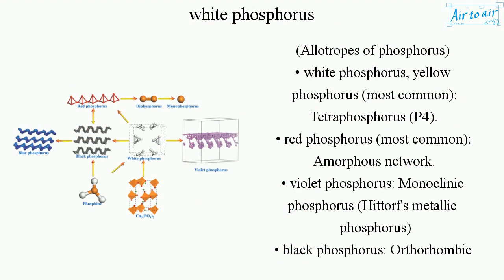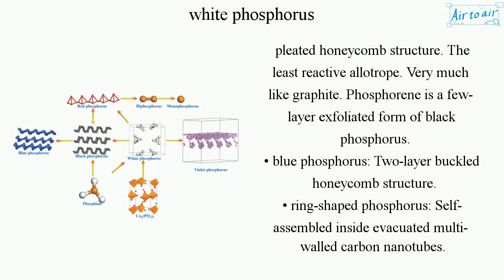Allotropes of phosphorus include: white phosphorus (yellow phosphorus), the most common form, tetraphosphorus P4. Red phosphorus, the most common amorphous network form. Violet phosphorus and monoclinic phosphorus. High-pressure metallic phosphorus. Black phosphorus, with an orthorhombic pleated honeycomb structure, is the least reactive allotrope — very much like graphite. Phosphorene is a few-layer exfoliated form of black phosphorus.